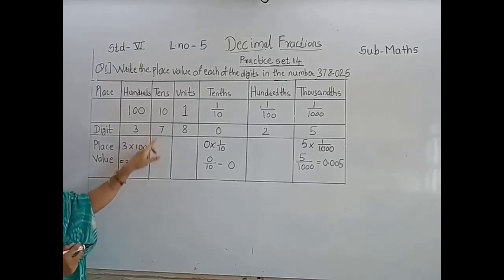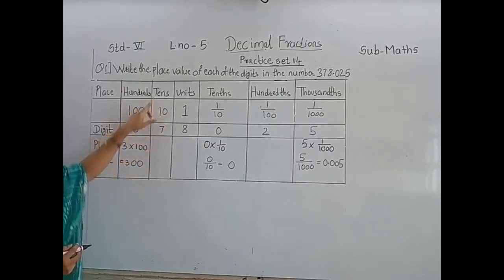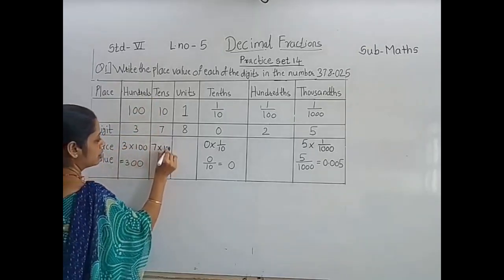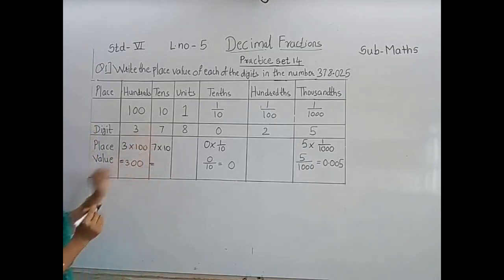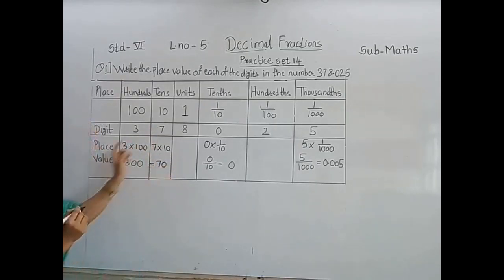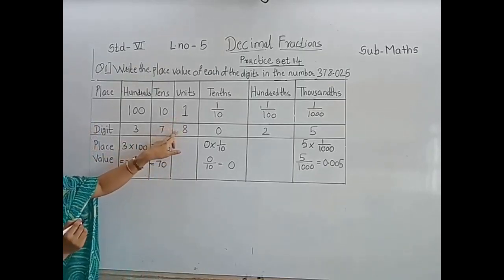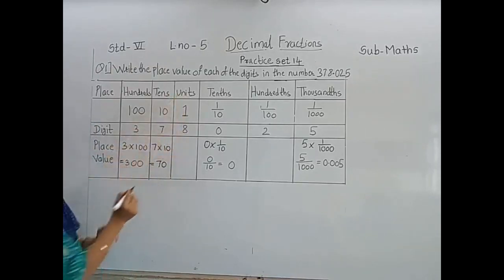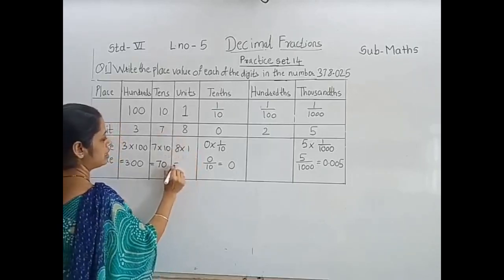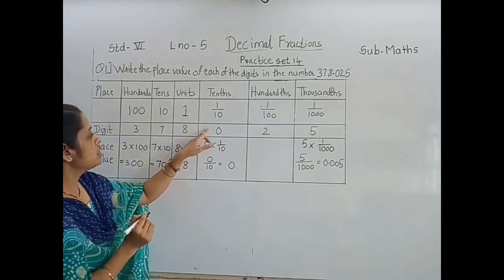Come to the next digit: 7. The place of 7 is 10, so we have to multiply 7 by 10 and we get the place value of 7, that is 70. Now come to the next digit, that is 8. Place of 8 is unit, so 8 we have to multiply by 1. So the place value of 8 is 8.